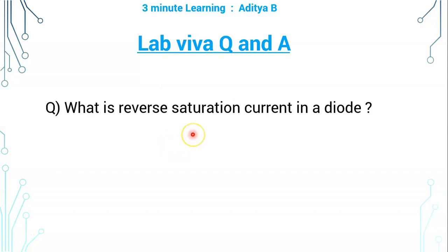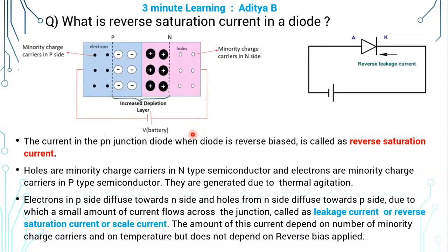What is reverse saturation current in a PN junction diode? The current in the PN junction diode when the diode is reverse biased is called as reverse saturation current.